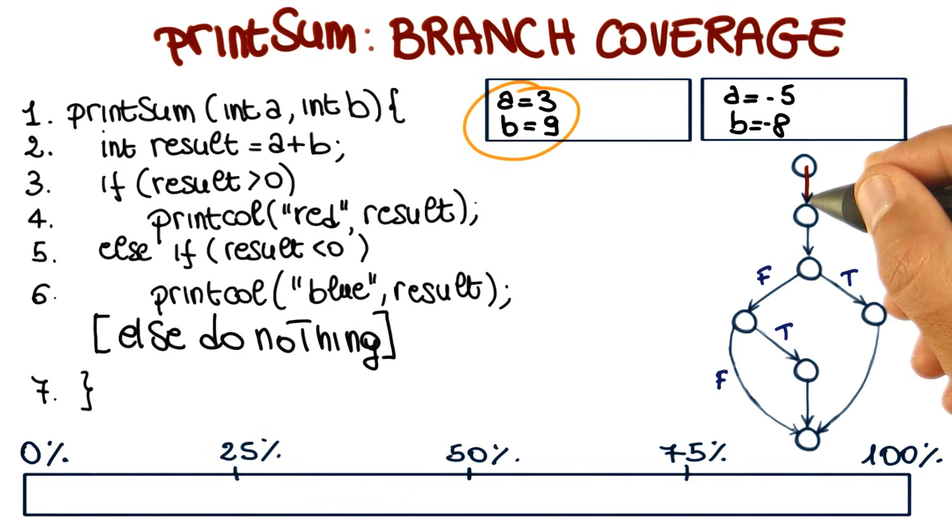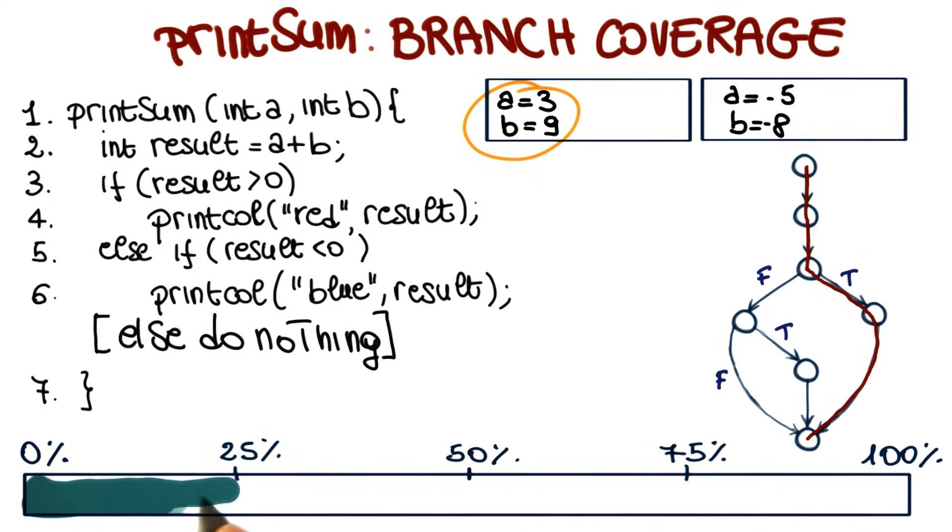I start from the first one. When we execute it, we follow the code, we get to this decision point. Because the predicate in the if statement is true, we follow the true branch, and therefore we get here, and then we exit from the program. So in this case, we covered one of the branches, which means that we got to 25% coverage.